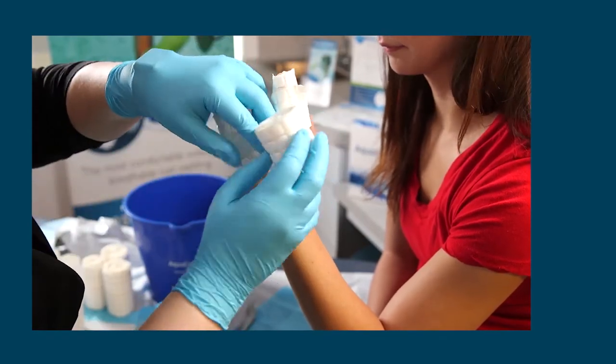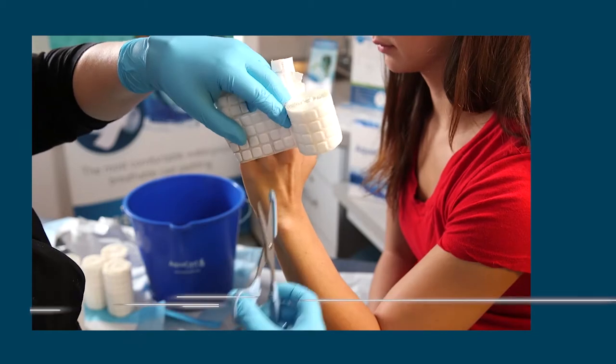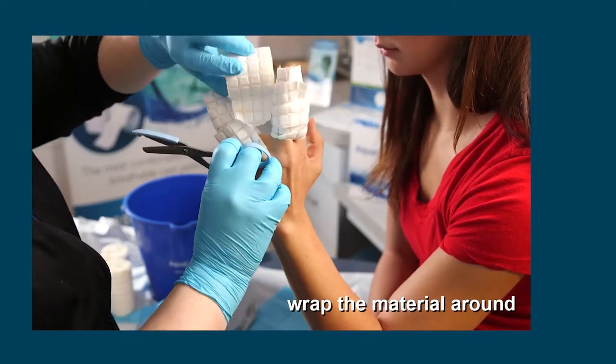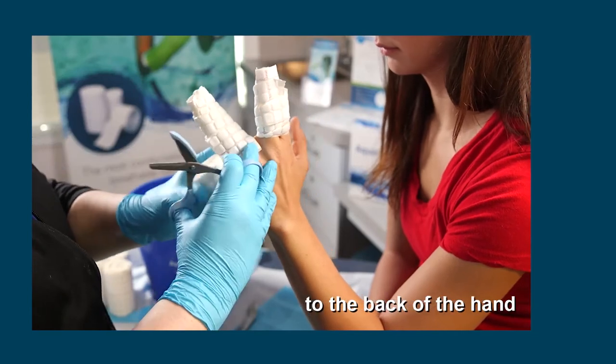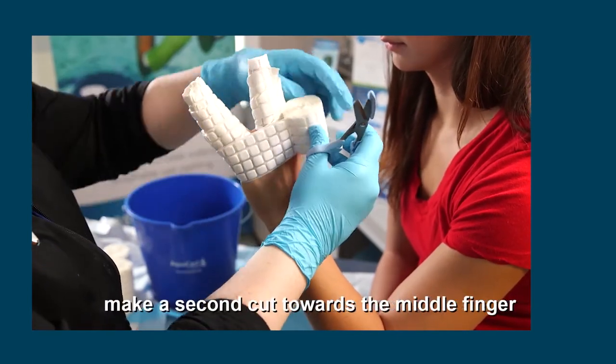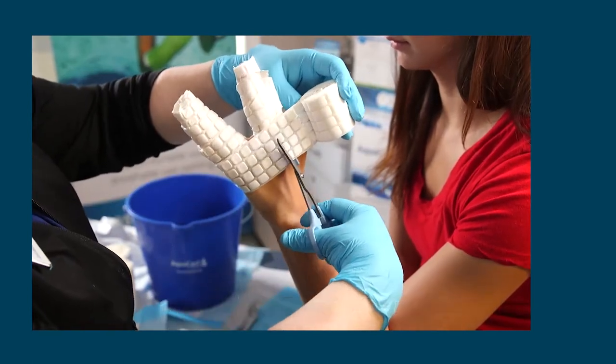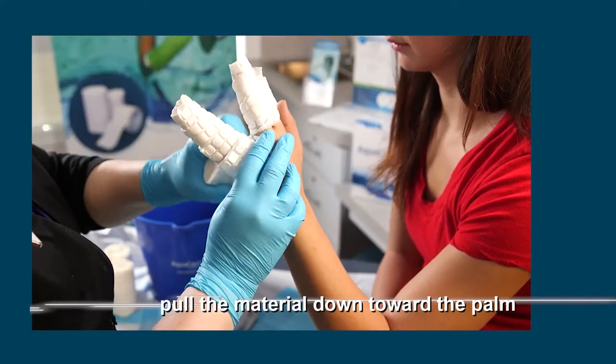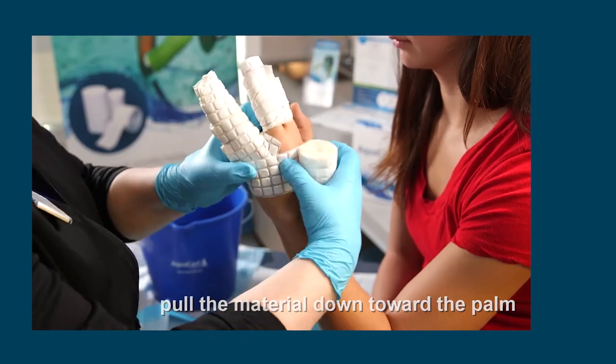To work through the web space between the fingers, make a small cut and wrap the material down and around to the back of the hand. Make a second cut towards the middle finger to allow for more coverage through the web space and pull the material down toward the palm of the hand.